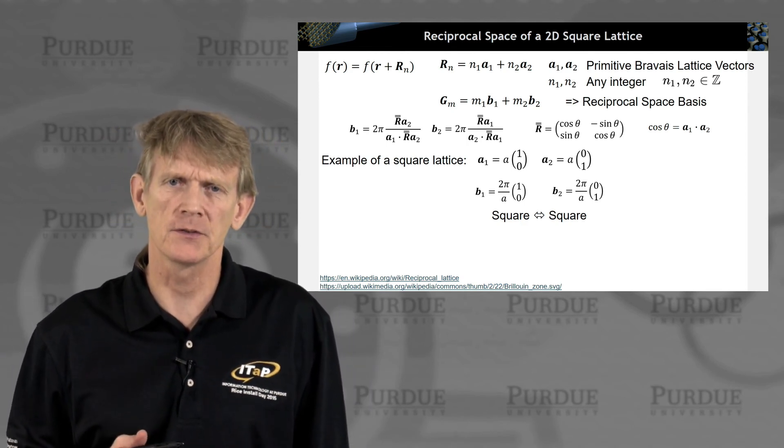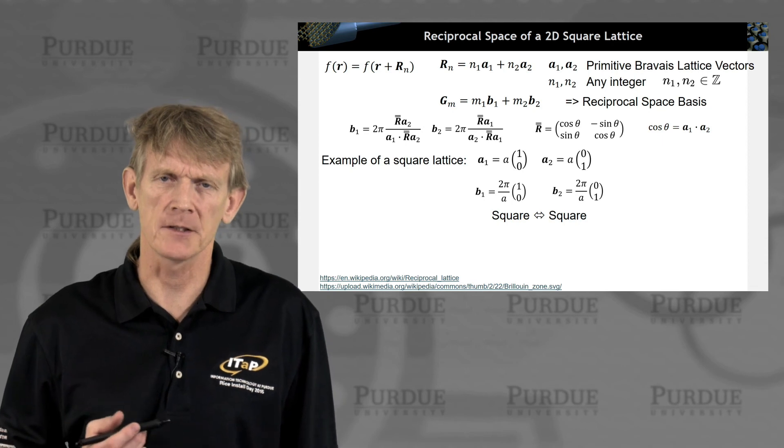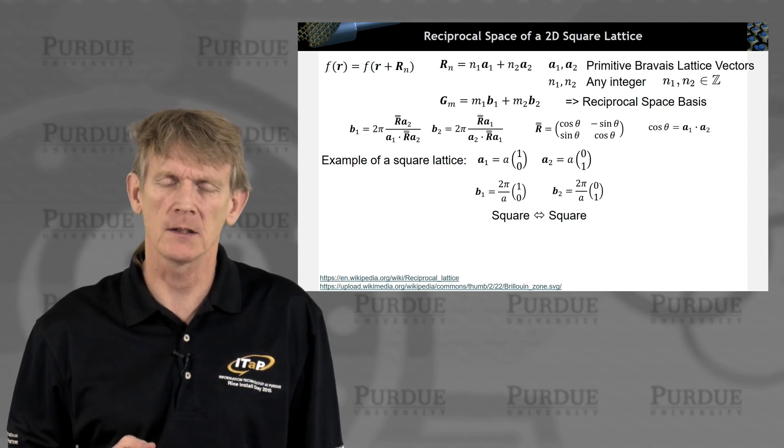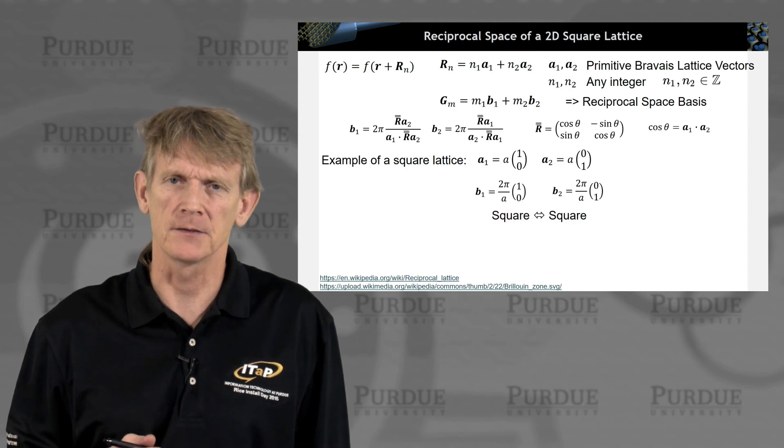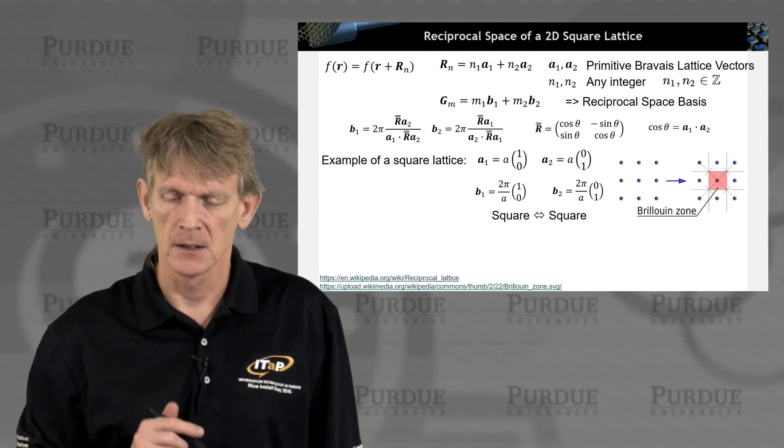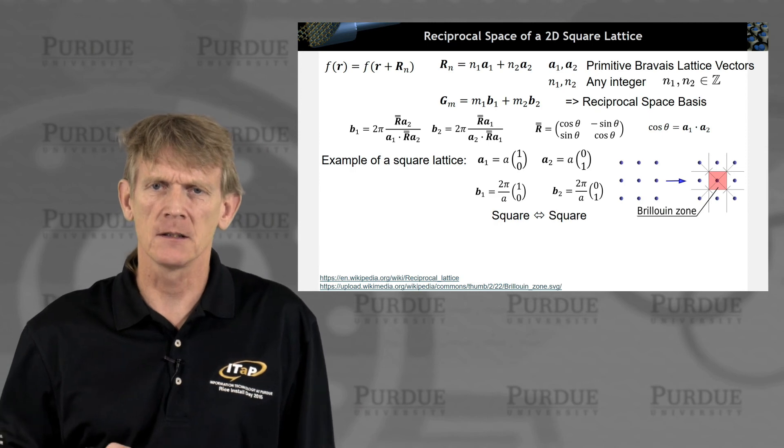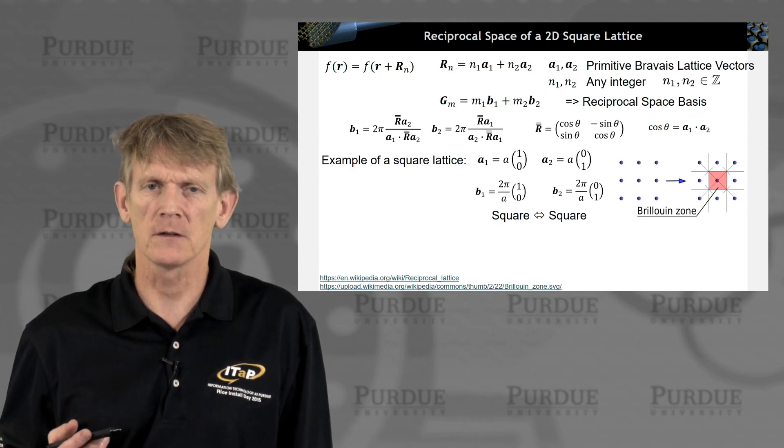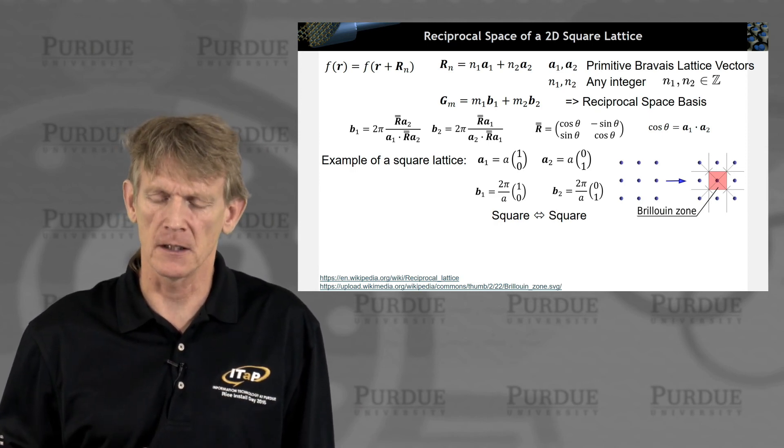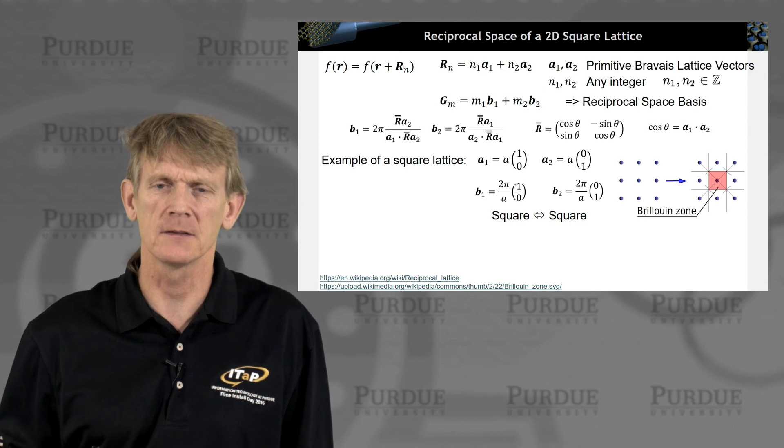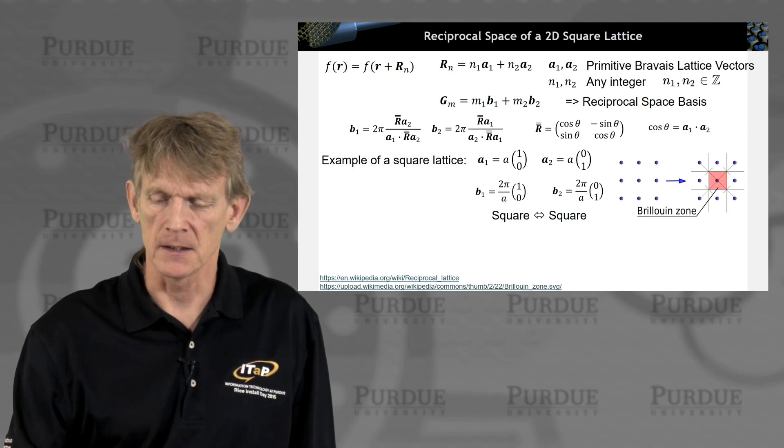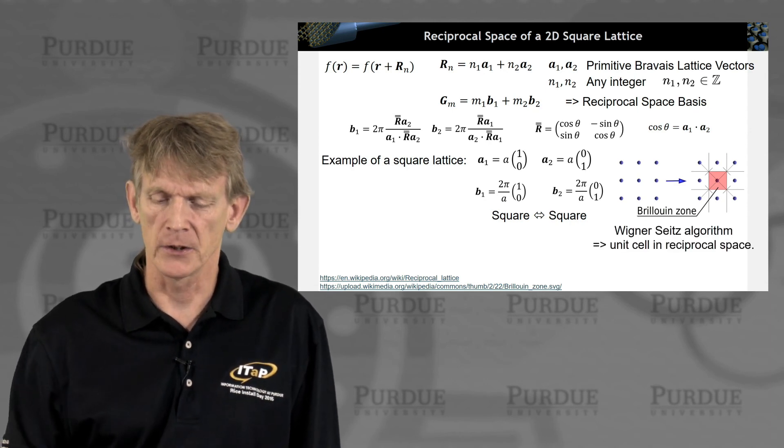So that's the simplest reciprocal lattice of a two-dimensional system. A square lattice in real space maps into a square lattice into reciprocal space. And the Brillouin zone is then also identical. You can obtain it with the usual Wigner-Seitz methodology, where you draw lines to the nearest neighbors, and you segment those lines in half, and that gives you the Brillouin zone.